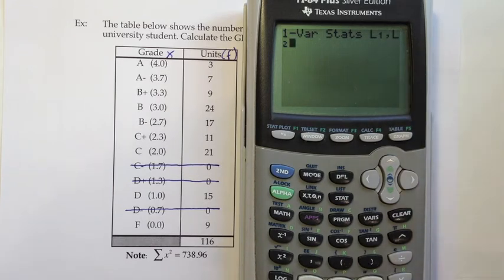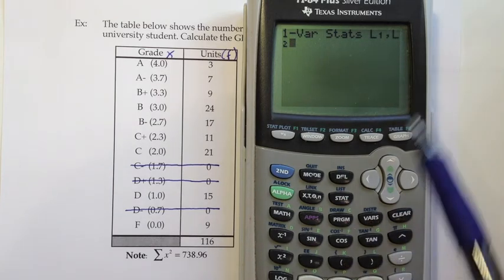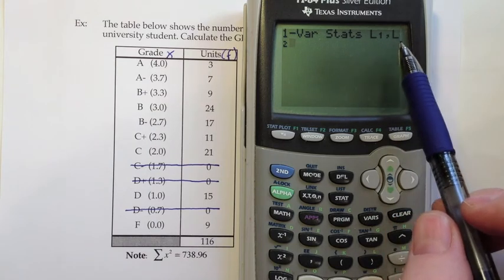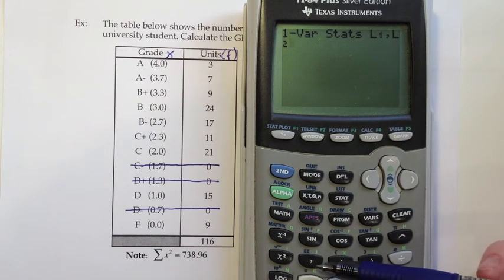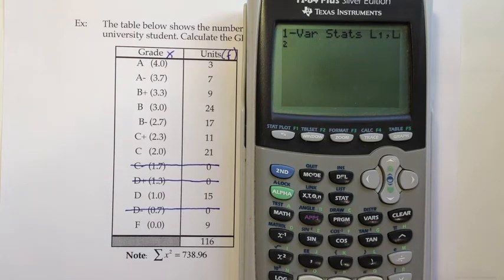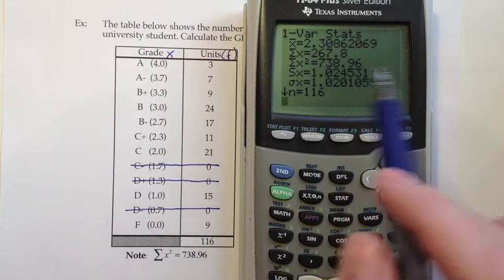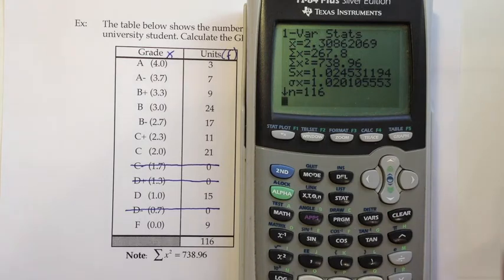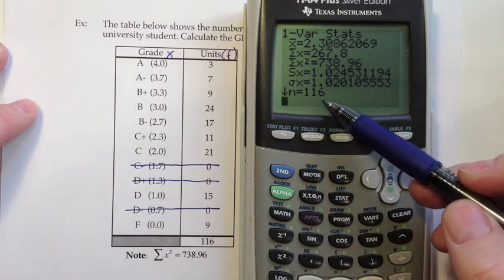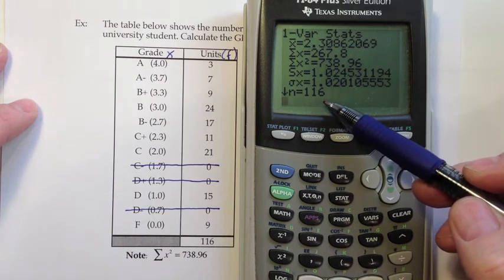So even though we do one variable stats we enter two things. L1 which is our variable, comma L2 which is our frequencies. And the comma is essential. If you don't do that it will multiply the two together and treat it as a single variable. We really need it to see one is the variable, one is the frequency. And that comma key right down here above the 7 key. So I'll press enter. And this is going to again do all the work for us. I would like to be able to check my work if I can. So one of the things is looking at the N.